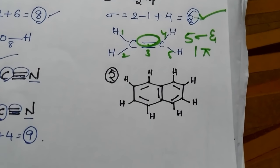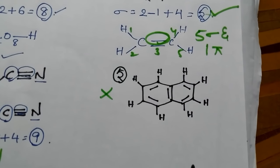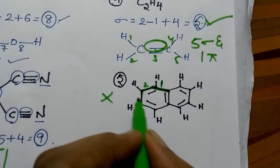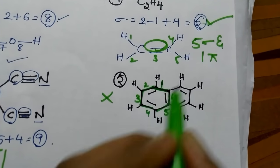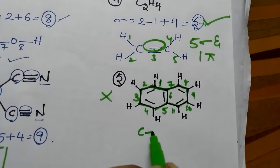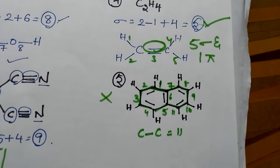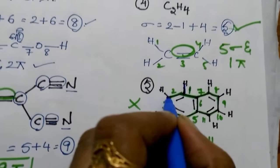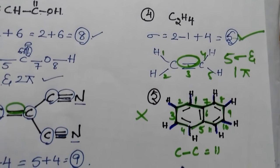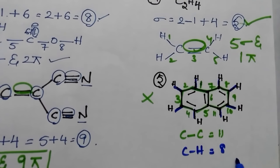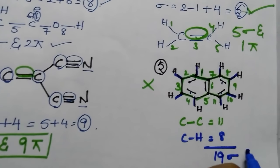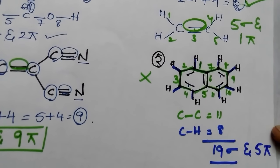But coming to benzene and these kinds of examples, this formula won't work out. In these cases, you just have to count manually. Counting the carbon-carbon sigma bonds: there are 11. And for carbon-hydrogen sigma bonds, there are 8. Total 19 sigma bonds are present. Coming to the pi bonds: 1, 2, 3, 4, 5 — so 19 sigma and 5 pi bonds are there.